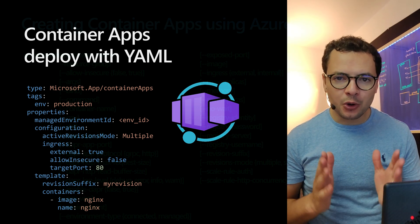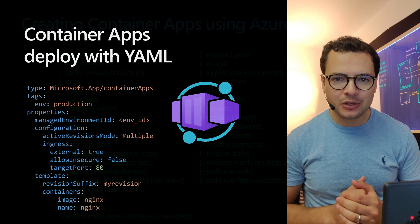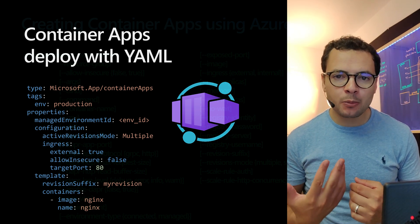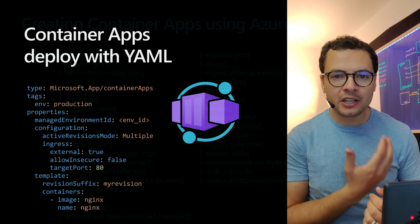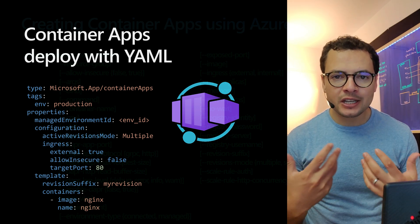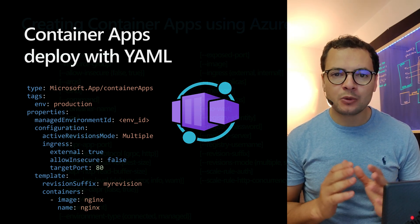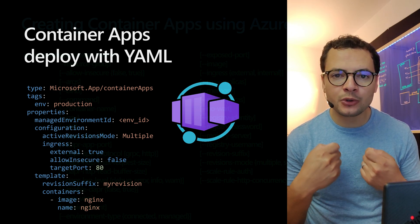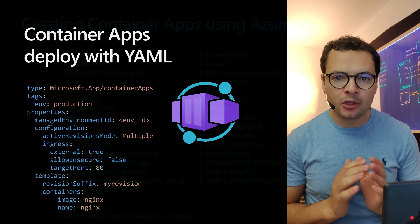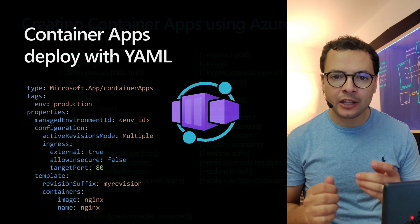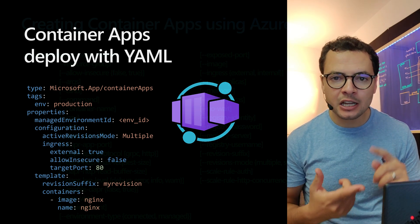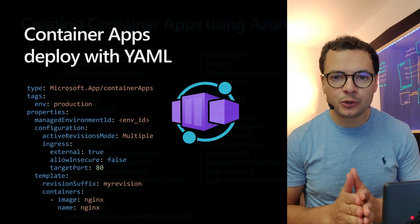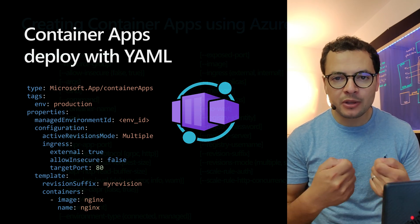In this video, we'll learn how to create a new container app using YAML configuration files. We know that we can create a new container app either using the Azure portal, the Azure CLI, or using Terraform templates. Today we'll see how to do that using YAML configuration files, where we create a YAML file with all the configuration for the container app, including the configuration for the ingress, the image, and the probes.